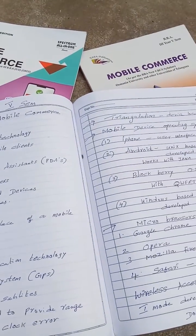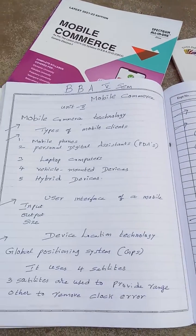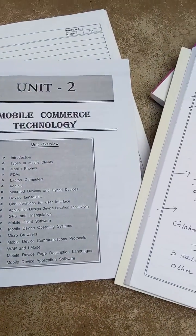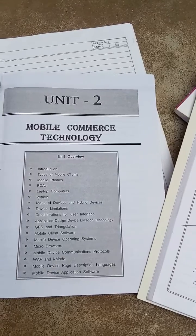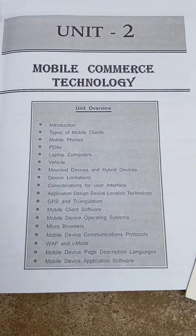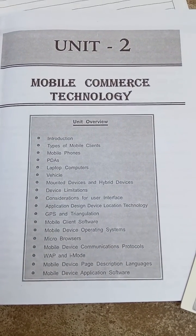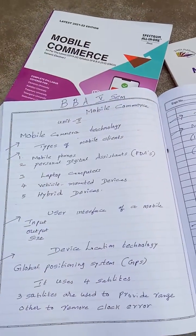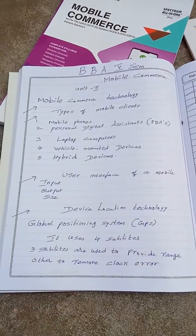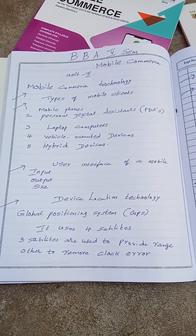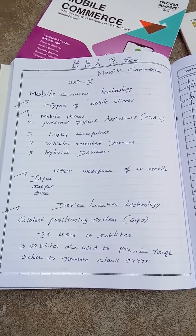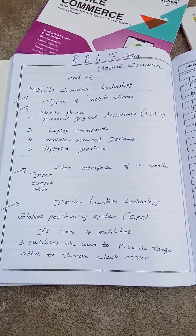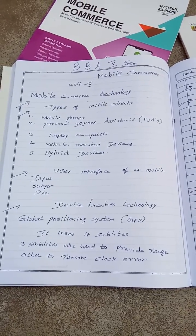My dear students, in mobile commerce for BBA 5th semester, unit number two is known as Mobile Commerce Technology. These are the topics — this is a lengthy unit. It doesn't mean mobile commerce means always writing about mobile phones and their users; that is only in unit number one. Here you need to learn about the technology: how a mobile phone works and what are the different kinds of mobile phones.